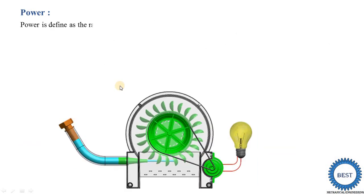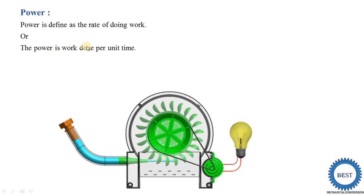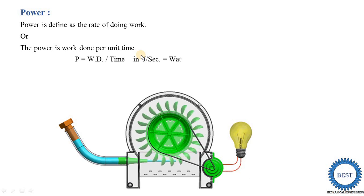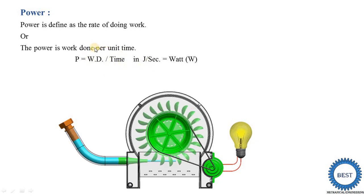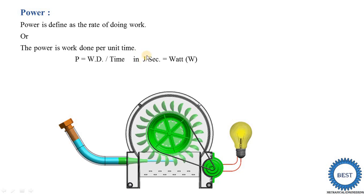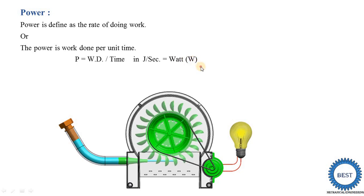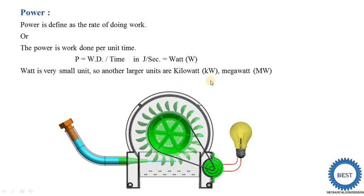Next is power. There are two definitions of power. First, power is defined as the rate of doing work. Another definition: power is work done per unit time. So, work divided by time gives power. Power is denoted as P: P equals work done divided by time. The unit of work is Joule, and the unit of time is seconds, so the unit of power is Joule per second, also known as Watt, denoted as W. Larger units include Kilowatt and Megawatt.